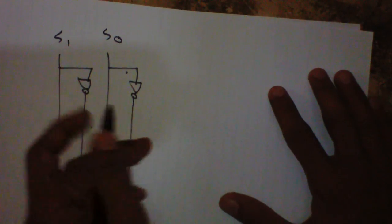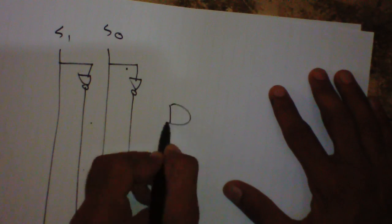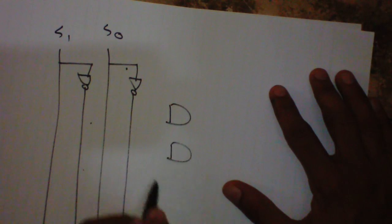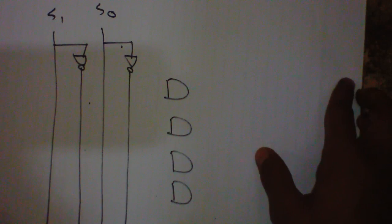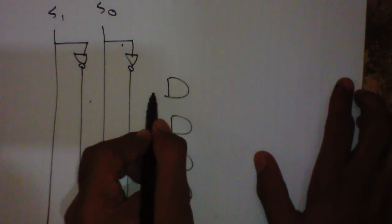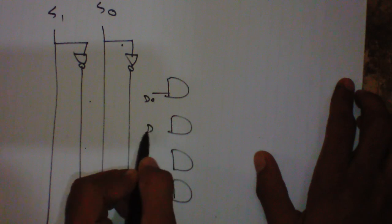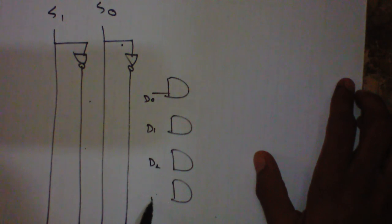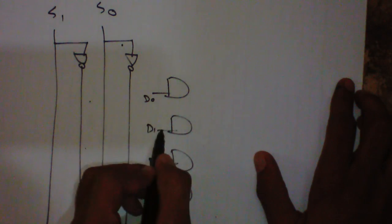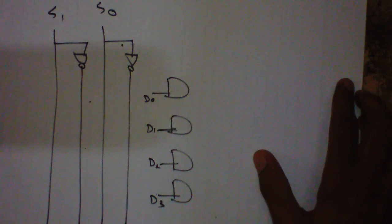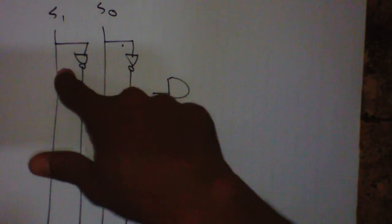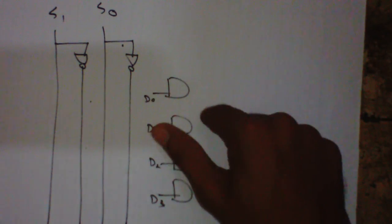Create four AND gates. D0, D1, D2, D3. We have applied the inputs here. Now we have to apply both select inputs to the AND gates.